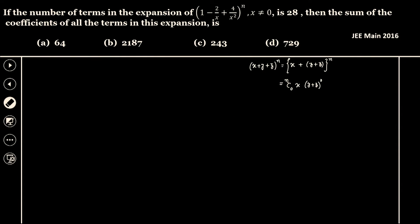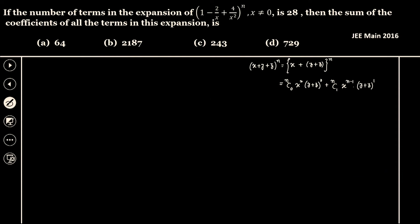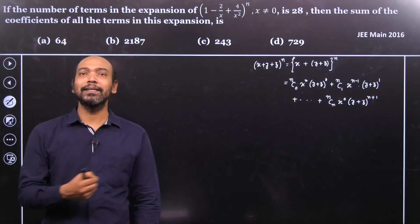Let's write down a few of the terms for better understanding. We have x to the power n, plus nC1 times x to the power n minus 1 multiplied by y plus z whole to the power 1, and continuing all the way to nCn times x to the power 0 and y plus z whole to the power n plus 1.